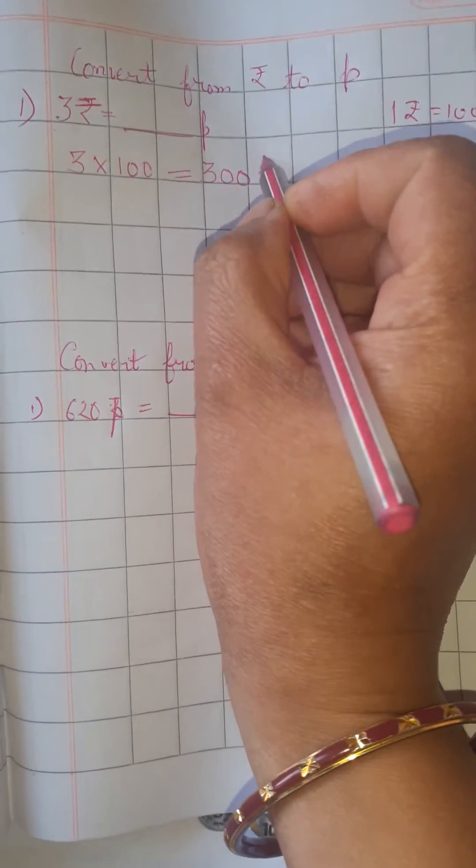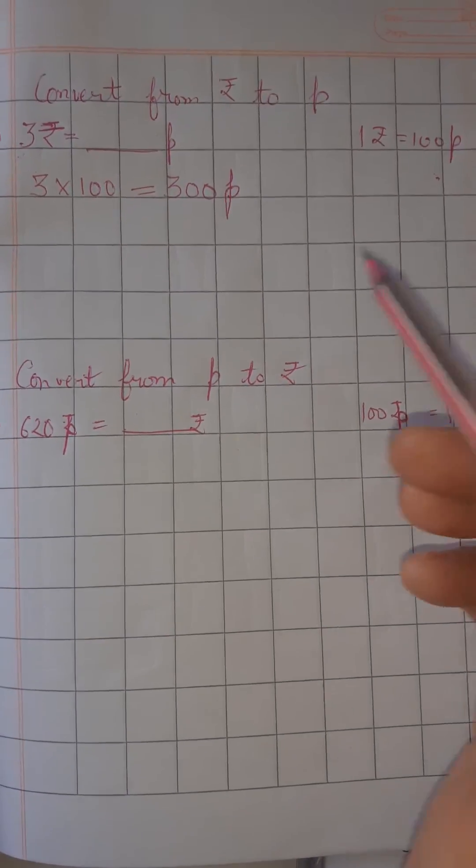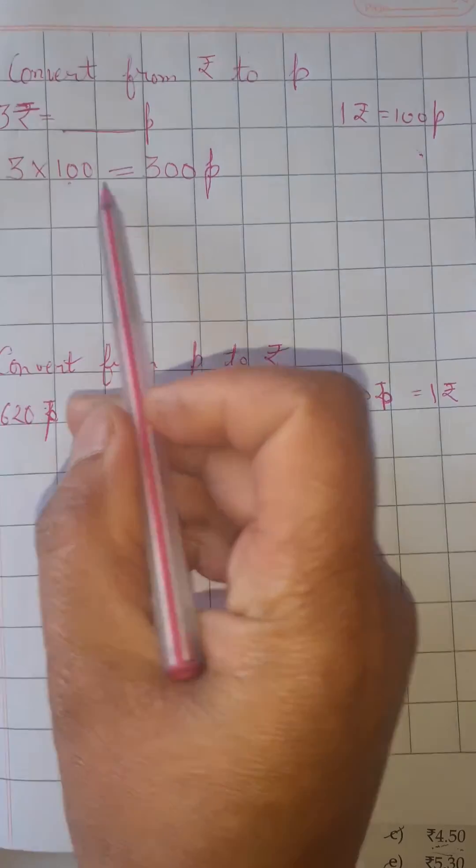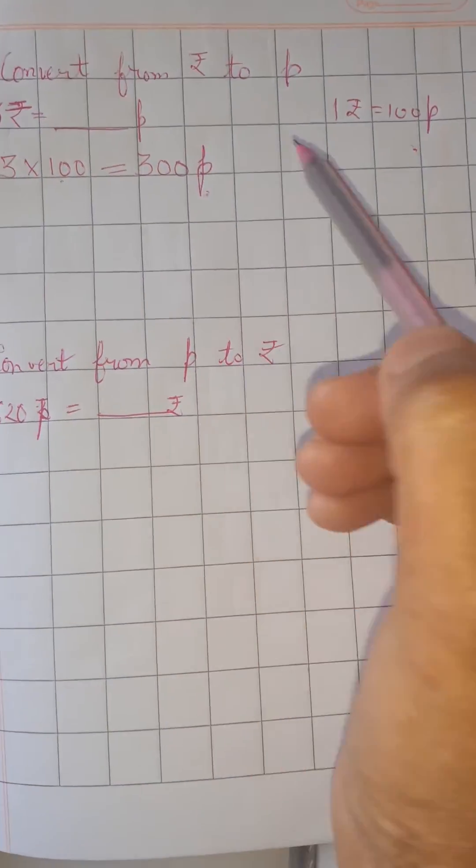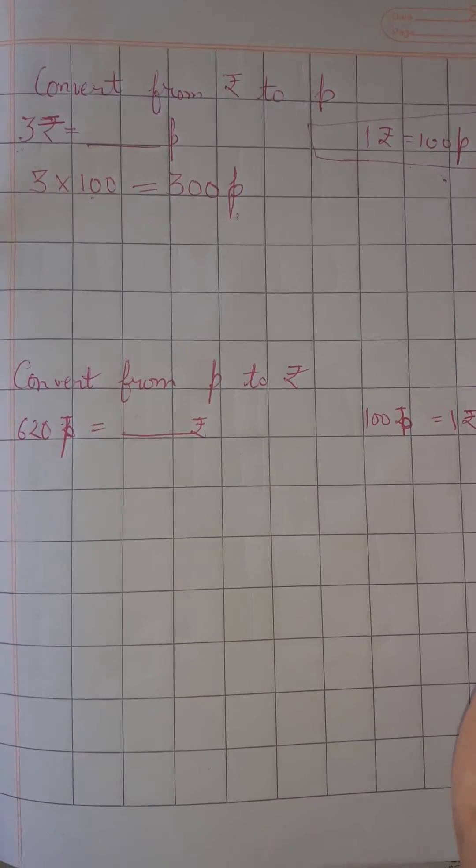Similarly, if you want to calculate with 5 rupees or 6 rupees, you will directly multiply it by 100 and then you will get the paisa, because this is the formula: 1 rupee is equal to 100 paisa.